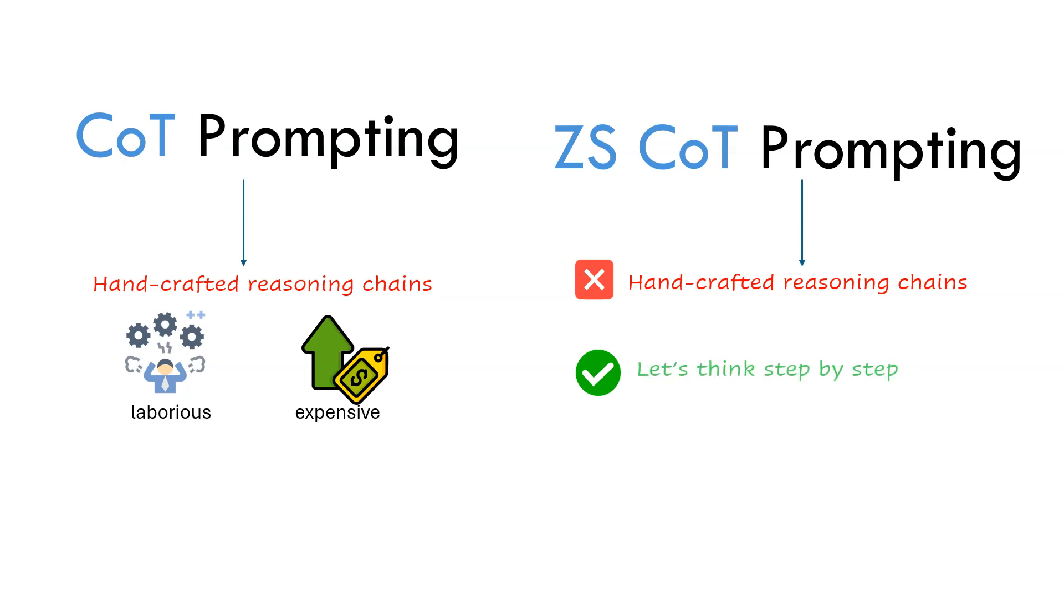Moreover, zero-shot COT prompting is versatile and task agnostic. This is because you need not generate and provide reasoning chains separately for each task. All you have to do is to include the magical phrase, let's think step by step, for any task.